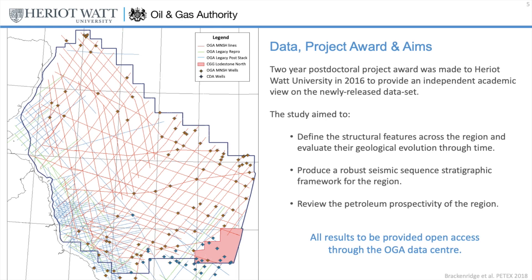This is the dataset that was released open access by the Oil and Gas Authority. The study makes use of over 10,000 kilometres of regional 2D seismic data tied to legacy seismic and well data. Where necessary, additional data was used including the CGG Lodestone North 3D survey and additional well data from CDA. The study aimed to define structural features across the region, evaluate their geological evolution through time, produce a robust sequence stratigraphic framework, and review the petroleum prospectivity. All results have been released open access through the Oil and Gas Authority data centre website.